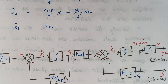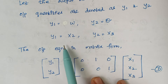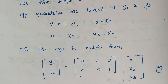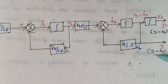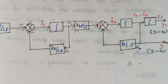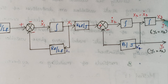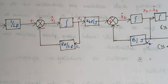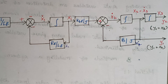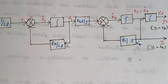Finally, for the outputs: Y1 = X2, so take the X2 line out as Y1. Y2 = X3, so take the X3 line out as Y2. The block diagram is now complete. I hope you are clear with this. If you have any doubts, let me know in the comment section. Thank you.